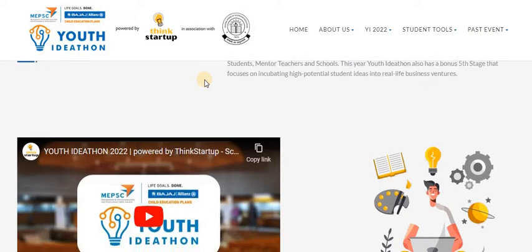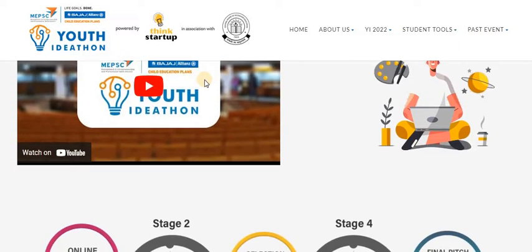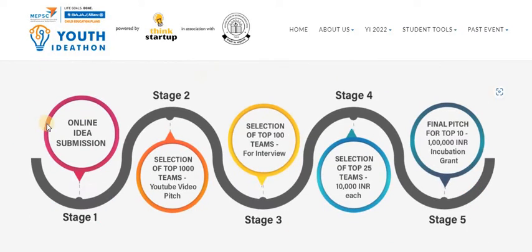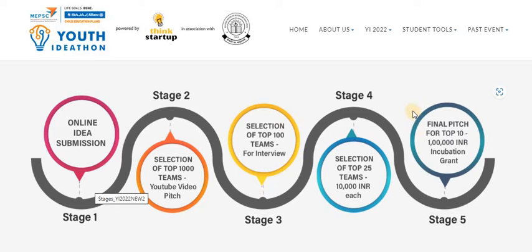They have staged this contest in five different stages. Stage one is online idea submission. Stage two is selection of top 1000 teams, followed by a YouTube video pitch and selection of top 100 teams, then an interview and selection of top 25 teams, and finally the top 10 will be awarded 1 lakh rupees as an incubation grant to convert their idea into a business.